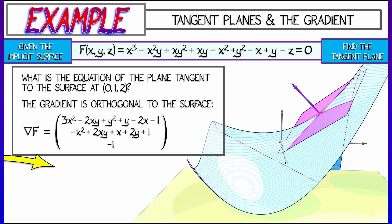Then compute the gradient of f because that's a vector orthogonal to the surface. That is given by 3x-squared minus 2xy plus y-squared plus y minus 2x minus one. Then minus x-squared plus 2xy plus x plus 2y plus one. And finally, negative one. Those are the three components of the gradient.